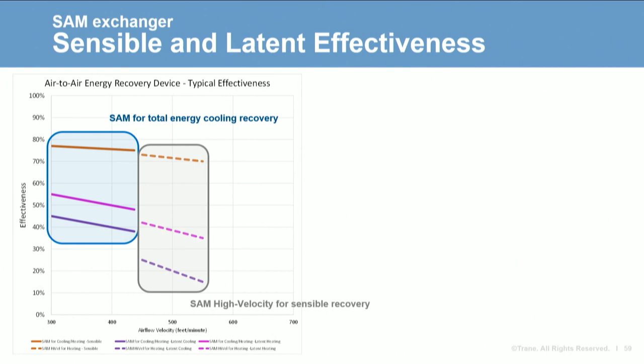SAM is also available with a wide-spacing exchanger for use at higher air velocity, sized for applications at 450 to 550 feet per minute air handler velocity. This high air velocity version is used for winter heating since latent recovery in summer will be very low, but using maximum spacing avoids the need to oversize the air handler. The advantage of this SAM over a sensible fixed plate exchanger is approximately 5% higher sensible effectiveness for the same size, and more importantly, it helps avoid condensate and ice formation.